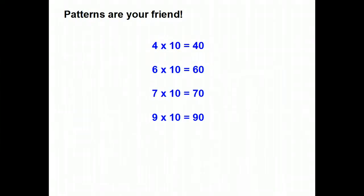Here's another way of looking at multiplying by 10. Patterns are your friend. We know that 4 times 10 is 40, 6 times 10 is 60, 7 times 10 is 70, and 9 times 10 is 90. But what do you see going on with the numbers? Well, I'm seeing, here's a 4, and here's a 0. 10 has one 0, 40 has one 0.